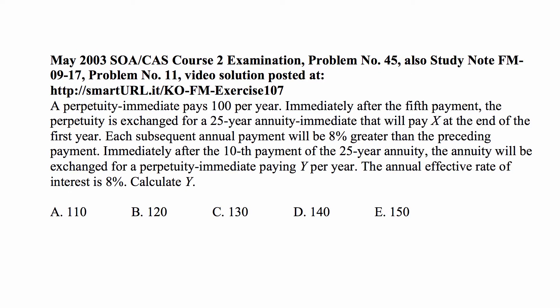Here's the problem for today. A perpetuity immediate pays 100 per year. Immediately after the fifth payment, the perpetuity is exchanged for a 25-year annuity immediate that pays X at the end of the first year. Each subsequent annual payment will be 8% greater than the preceding payment. Immediately after the tenth payment of the 25-year annuity, it will be exchanged for a perpetuity immediate paying Y per year. The annual effective rate of interest is 8%. Calculate Y.